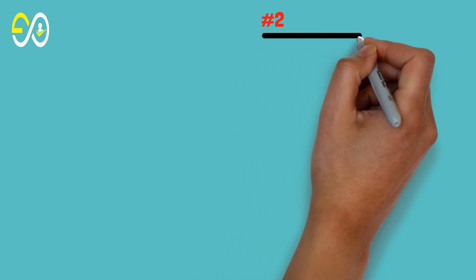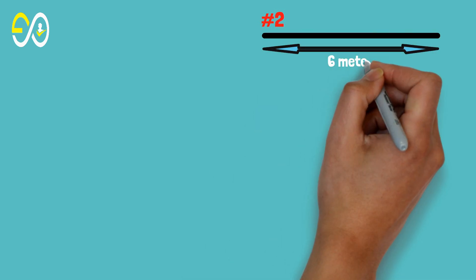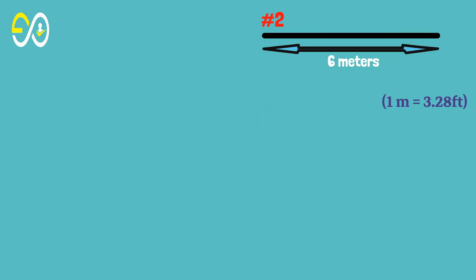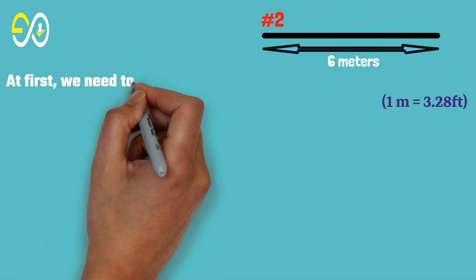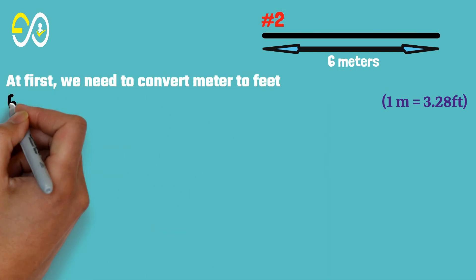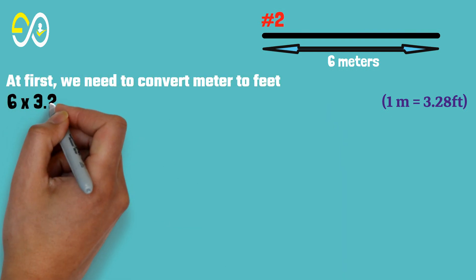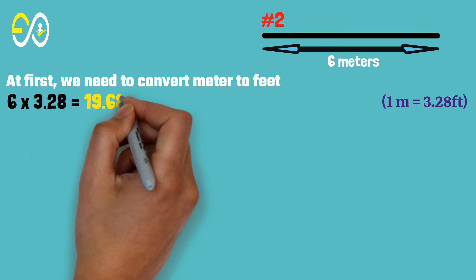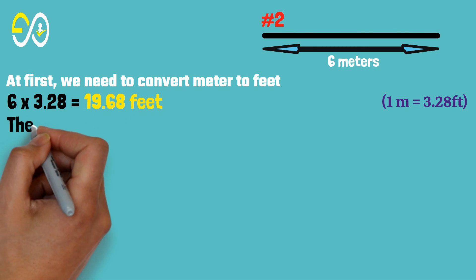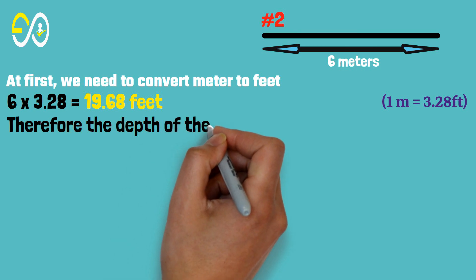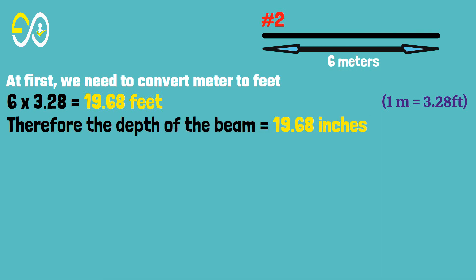Example 2: If the length of the beam is 6 meters, what will be the depth of the beam? First, we need to convert meters to feet. 6 times 3.28 equals 19.68 feet. Therefore, the depth of the beam equals 19.68 inches. If the value of the length of the beam is given in feet, then we should take the depth of the beam in inches.